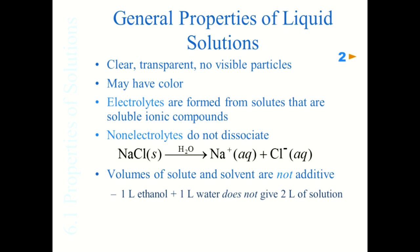Sodium chloride is an example of something that dissolves and becomes an electrolyte — sodium plus (aqueous) and chloride (aqueous) because they're dissolved in water. Also, volumes are not summable — you can't just add volumes together. If I have one liter of ethanol and one liter of water and mix them, it doesn't come out to two liters; it'll actually be about 1.8 liters.